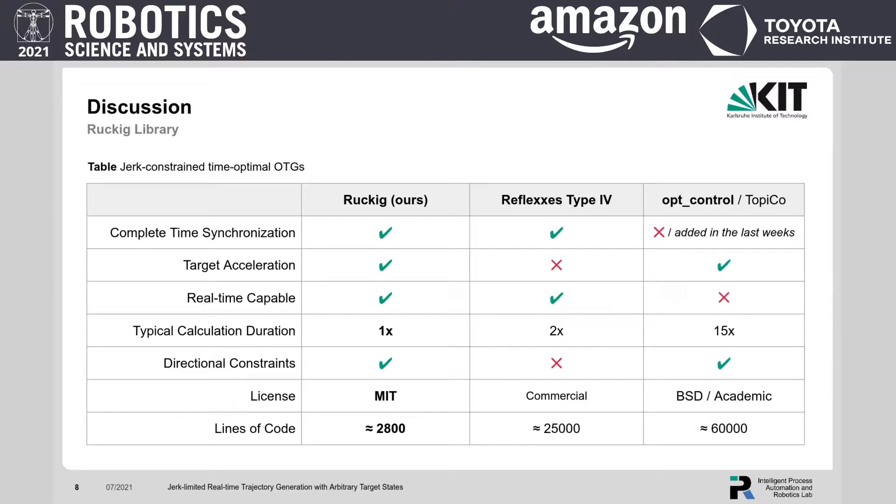We compare Ruckig to two other trajectory generators, Reflexes Type 4 and opt_control. The latter, however, just added a complete time synchronization that guarantees the solution in the last weeks.